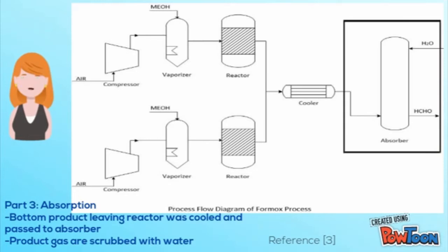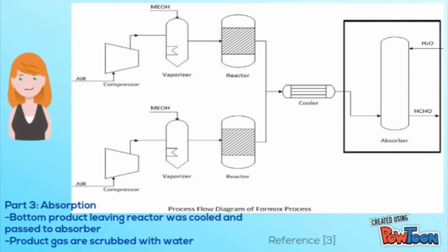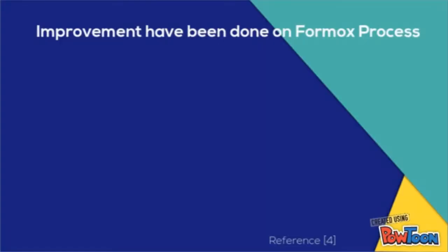Part three is absorption. The bottom product leaving the reactor is cooled and passed to an absorber, where the product gas is scrubbed with water, yielding formaldehyde at a concentration of 37 to 58 percent.